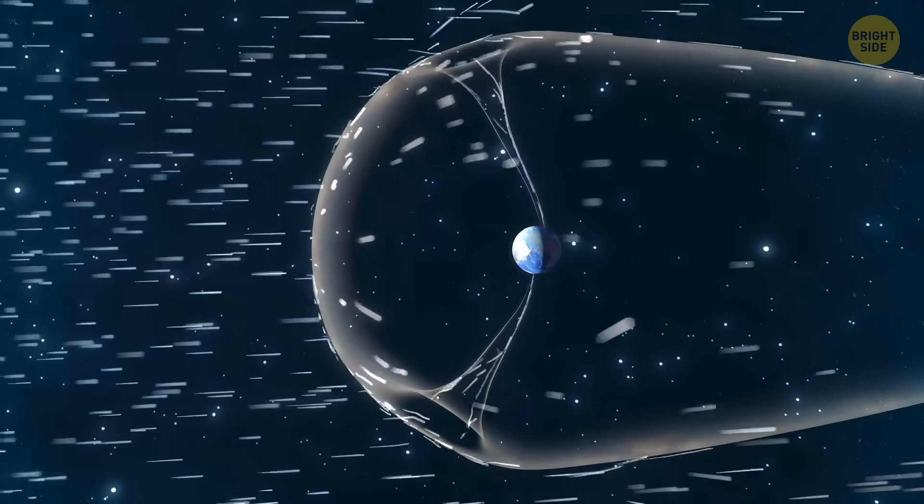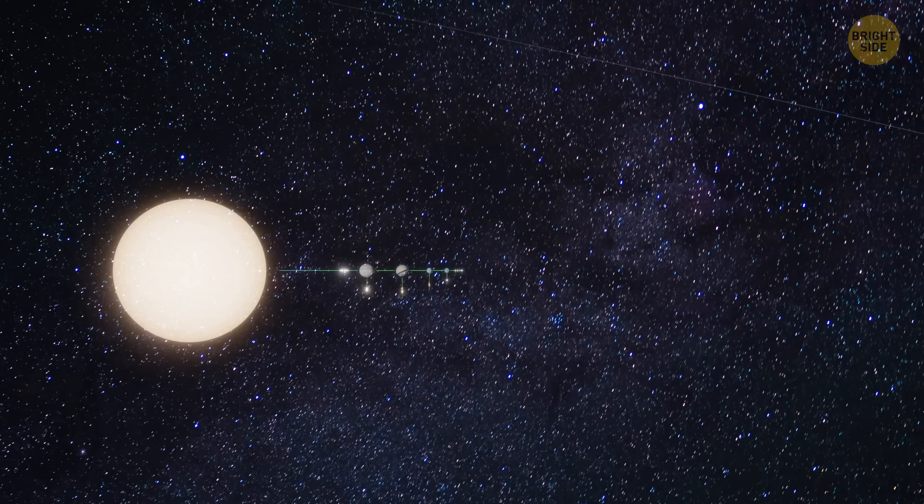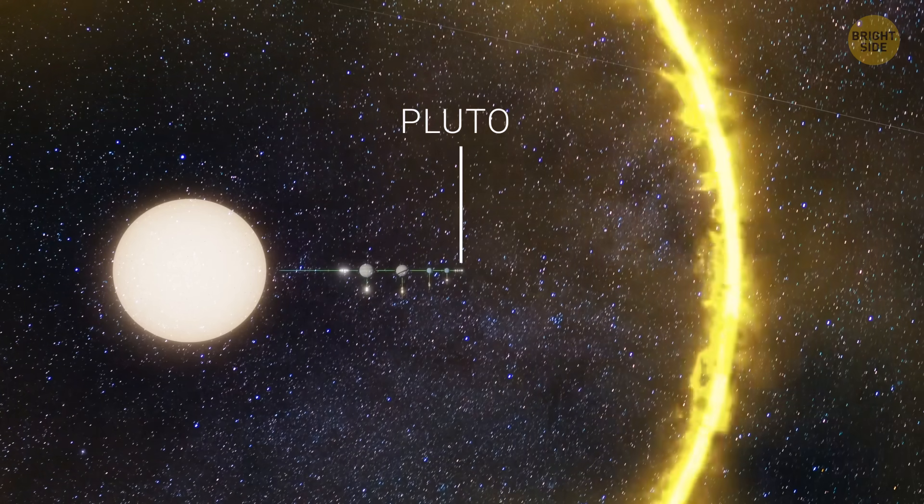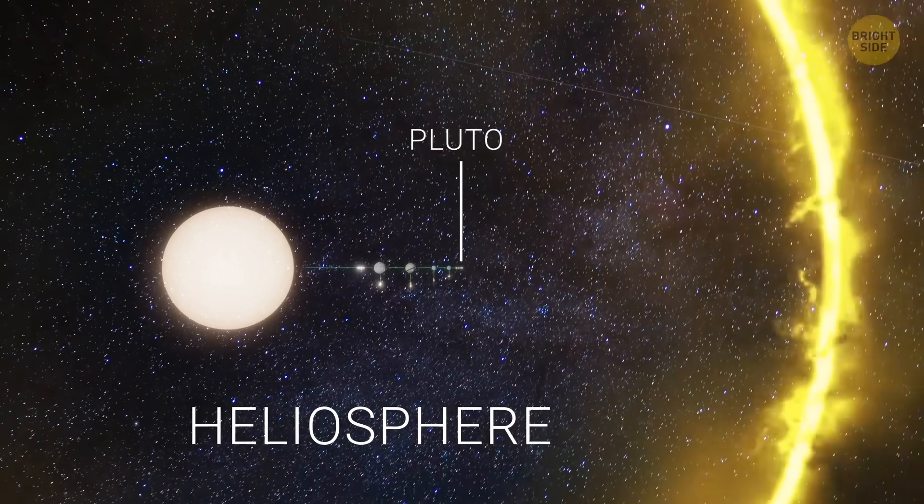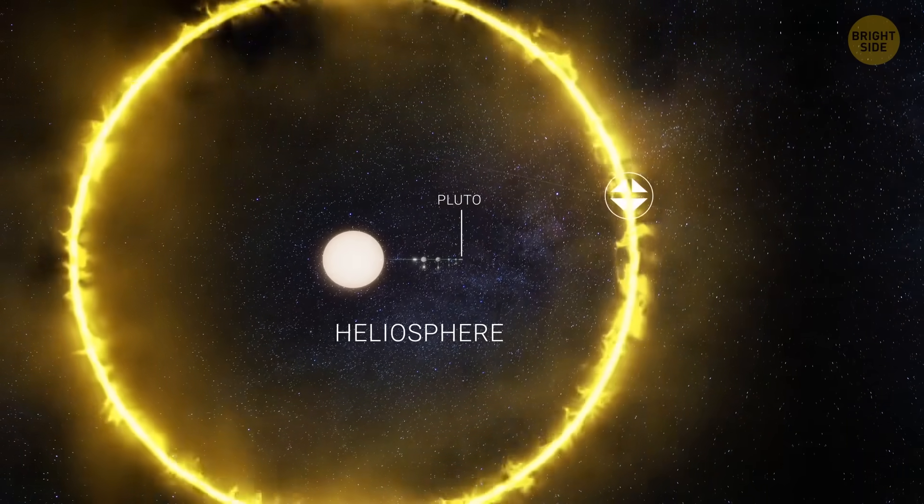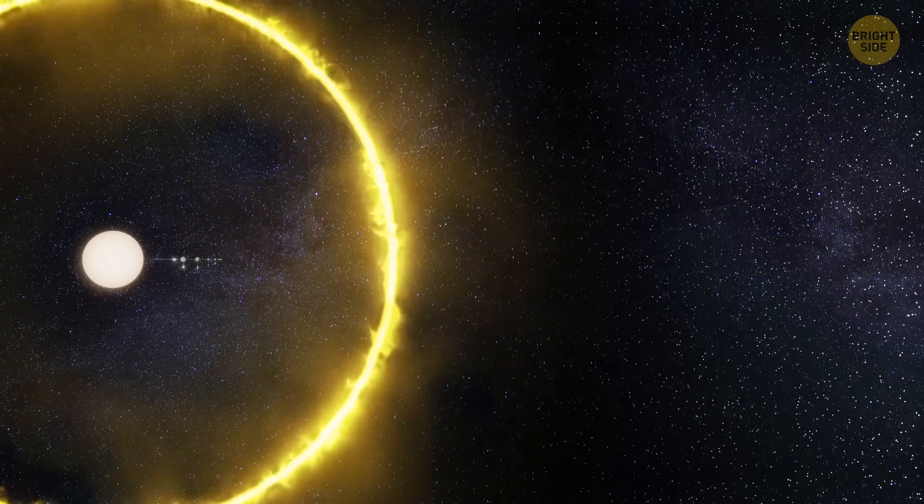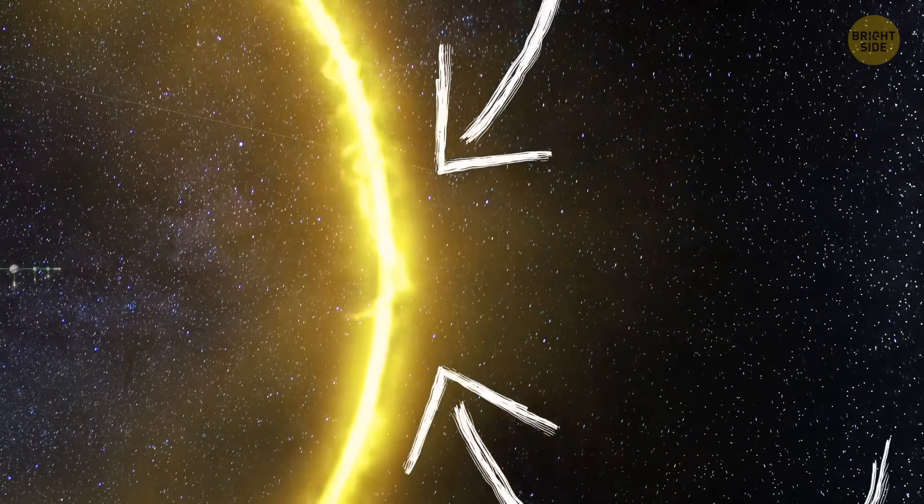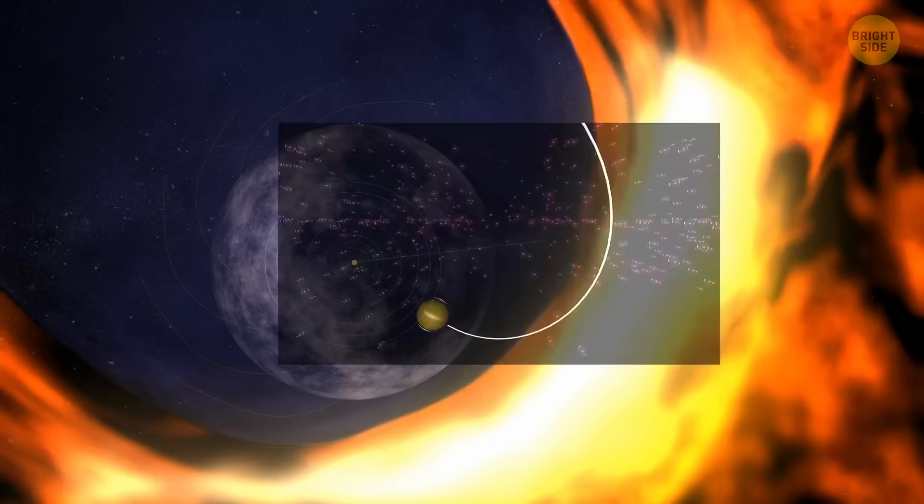You see, the Sun constantly sends out charged particles in a flow called the solar wind. This wind moves past all the planets and reaches about three times the distance to Pluto. The solar wind creates a giant bubble around the Sun and planets called the heliosphere. The heliopause is the outer edge of this bubble, where the solar wind meets the wind coming from other stars, called the interstellar wind. Here, the pressures from the solar wind and the interstellar wind balance each other. This causes the solar wind to turn back and flow along the tail of the heliosphere.